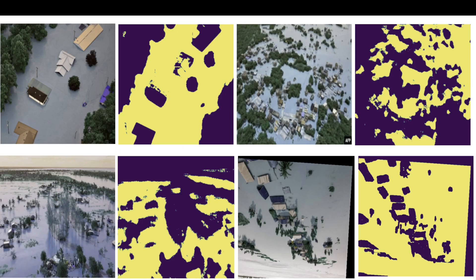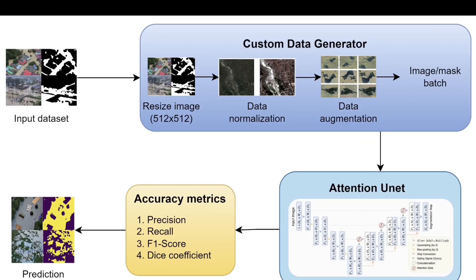Using this model, here are a few examples of flood segmentation results. The flooded regions are represented by yellow color and the background by a different color, so you can quickly map out the flooded area from imagery — whether from a camera or a drone. Note that this model does not work for satellite imagery, because satellite imagery resolution is quite low.